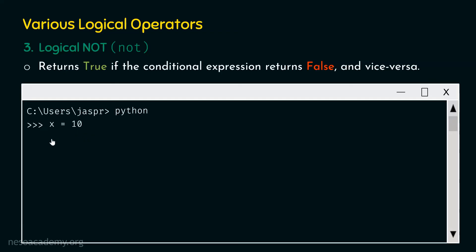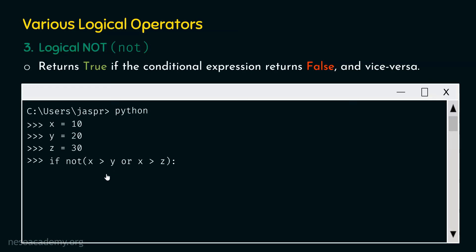Let's type: X equal to 10, Y equal to 20, Z equal to 30. Now type: if not (X greater than Y or X greater than Z), followed by a colon. Note that after 'not' we have added parentheses. We are interested in inverting the result of the logical expression inside. Between the two conditional expressions we have the OR operator.